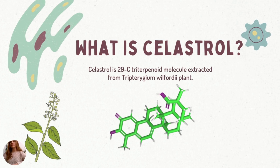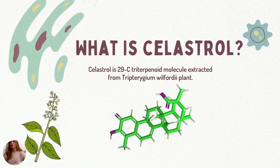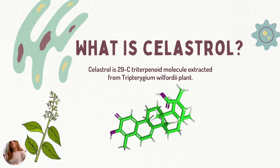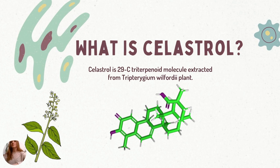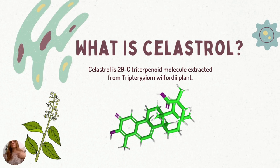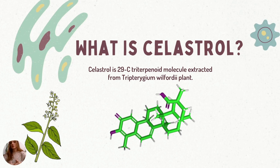Celastrol is a herbal secondary metabolite extracted from Tripterygium wilfordii, which is a plant growing only in China today. It is a 29-carbon triterpenoid molecule and its molecular weight is approximately 450 kilodaltons. Celastrol, along with other triterpenoids, are commonly used in traditional medicine. However, they can be very poisonous even in low doses.